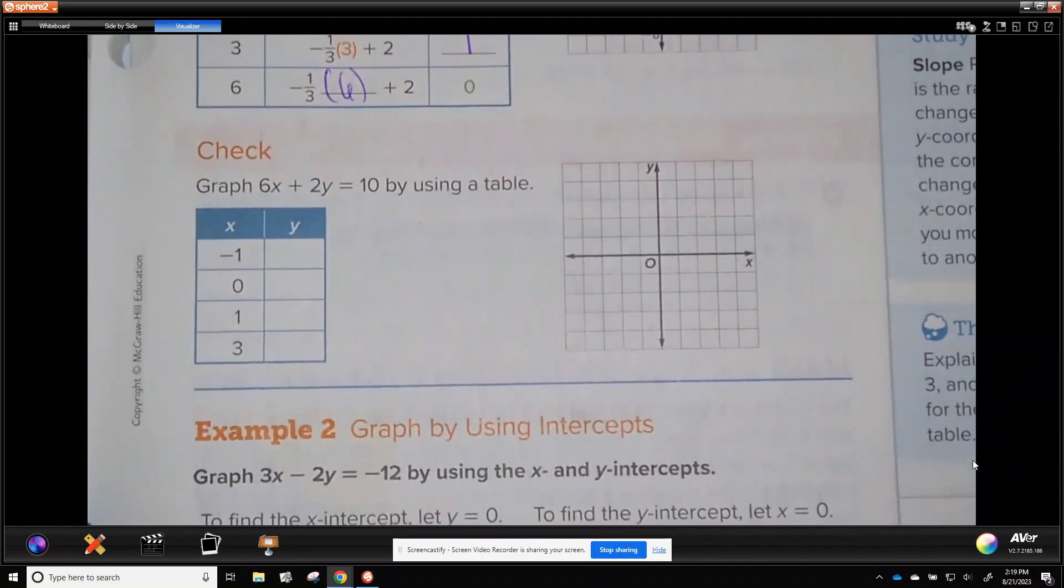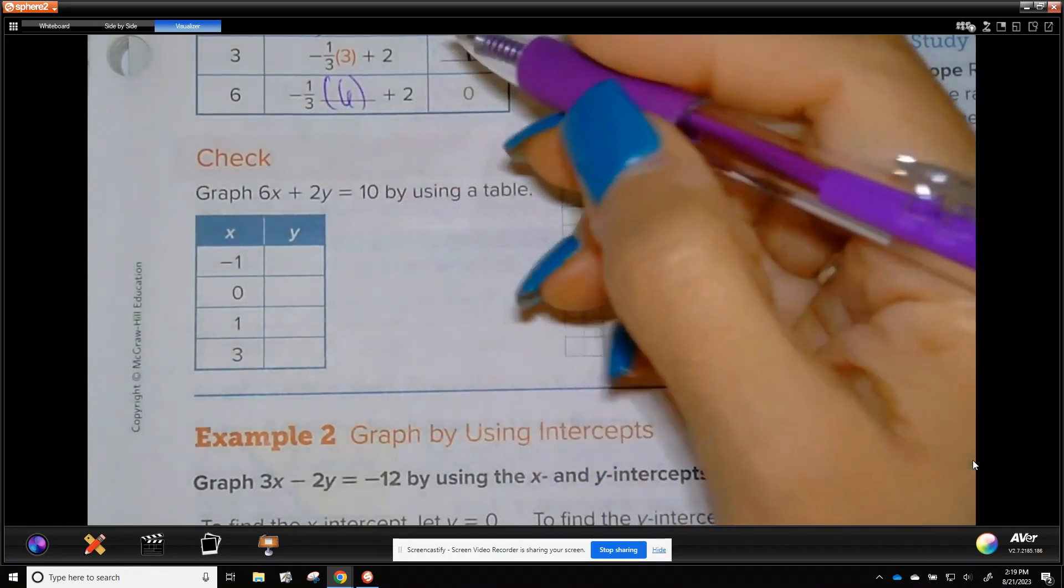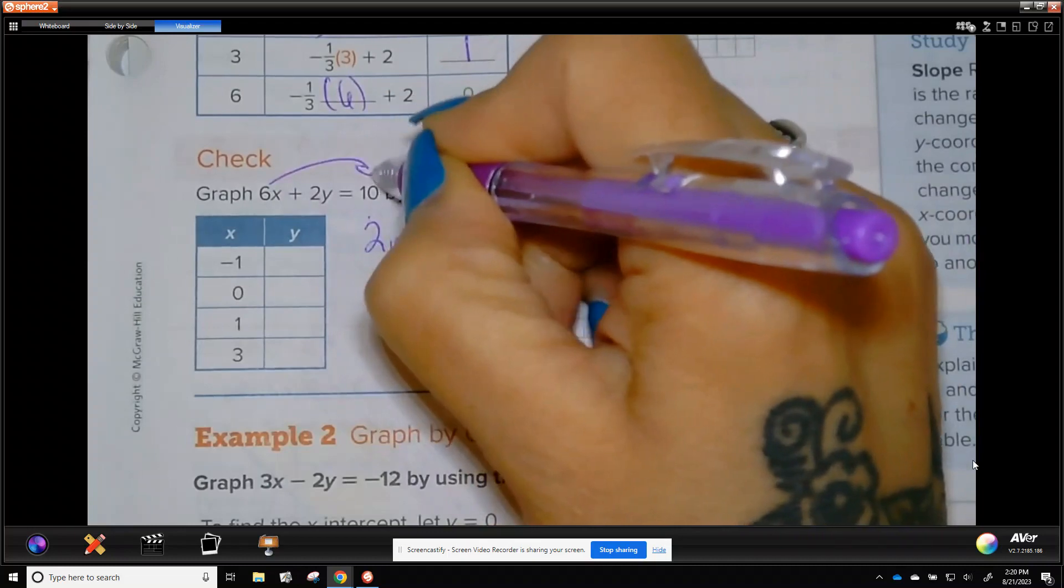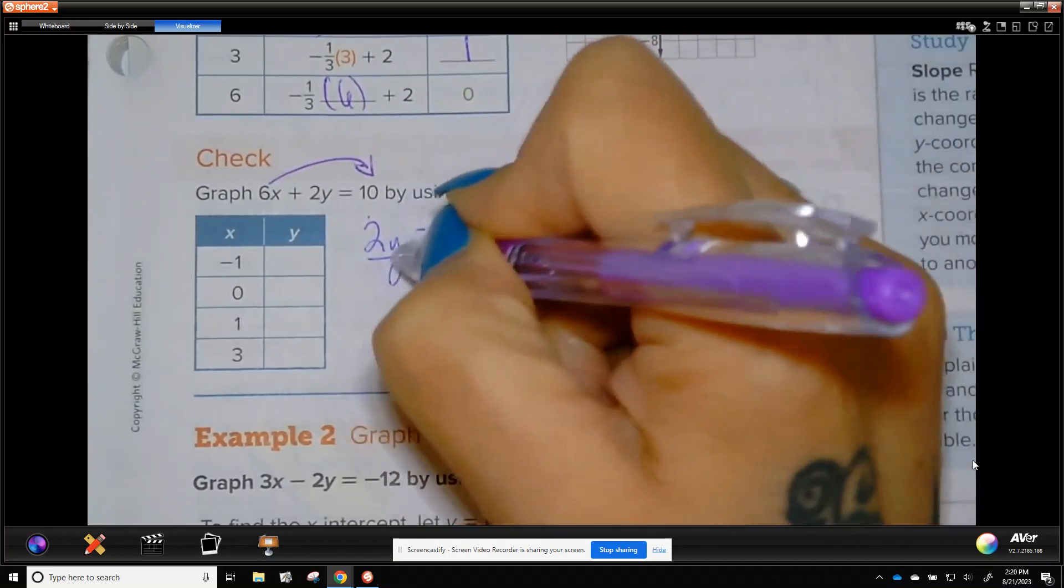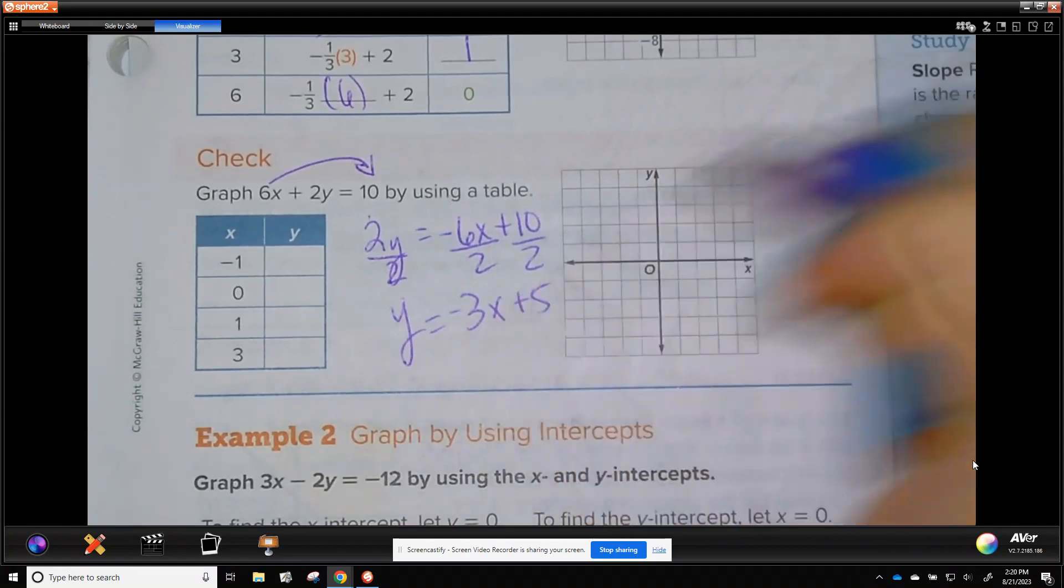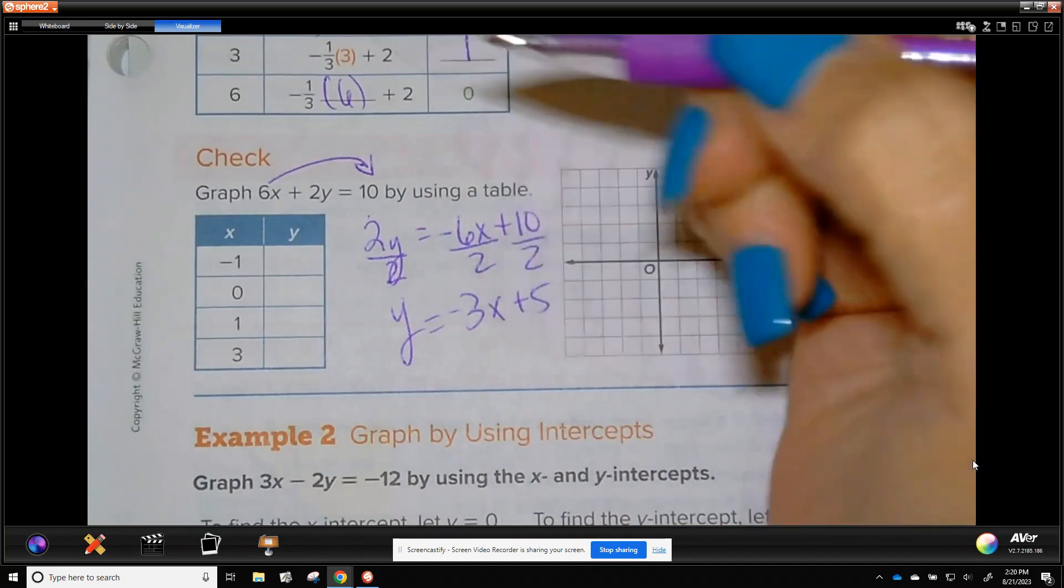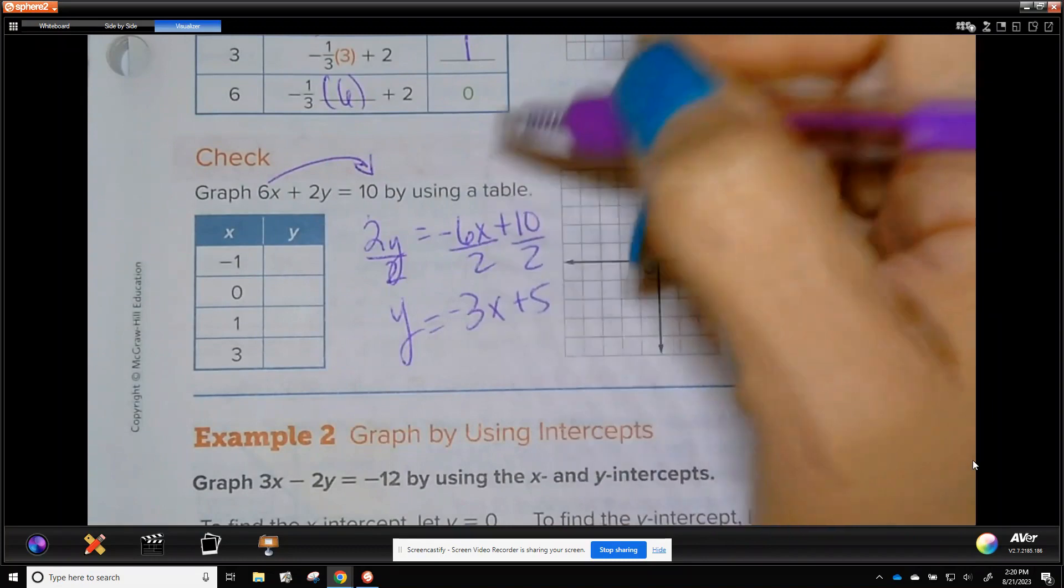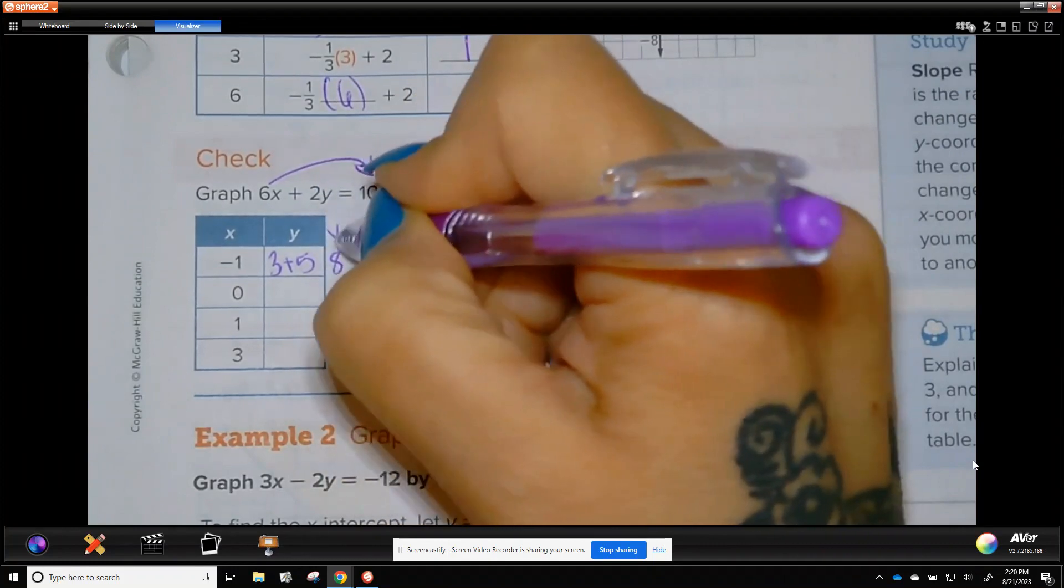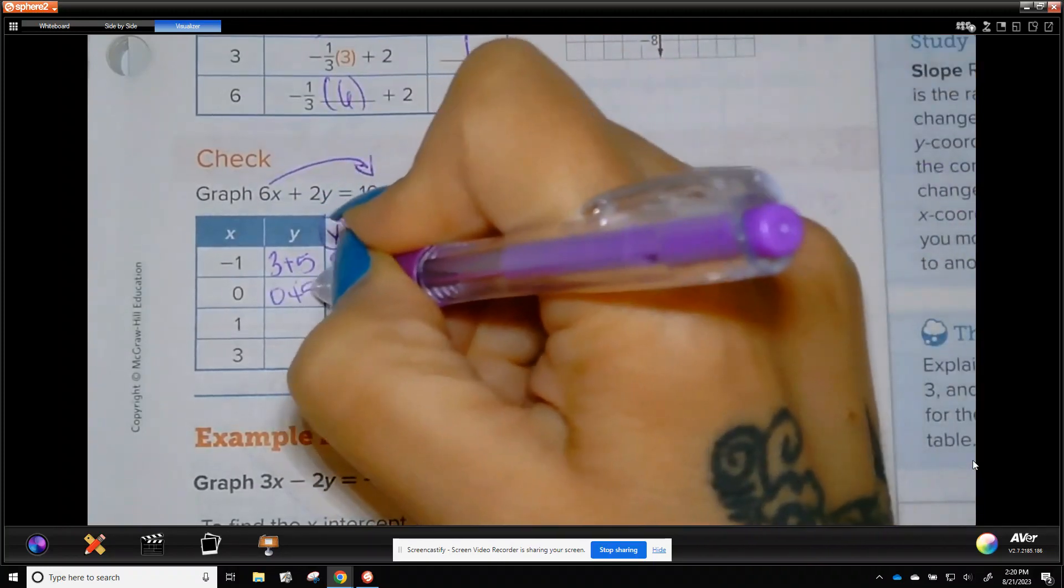Okay, so let's do this one. They want us to use a table. So again, this is standard form. Something x plus something y is a number. So to do the table, we have the x values. We have to get y. So I get 2y equals, again, only the 6x crosses. So it's going to be negative 6x plus 10. Now we're going to divide by 2. We get y equals negative 3x plus 5. So we're using the table. So let's use the table and then plot the points. Negative 1. So negative 1 times negative 3 is 3. So 3 plus 5 is 8. I'm going to do y over here. 0. 0 is easy. You just ignore the x. So 0 plus 5 is 5.